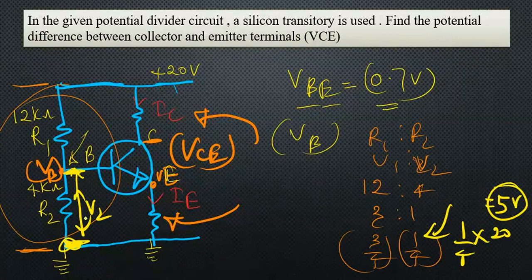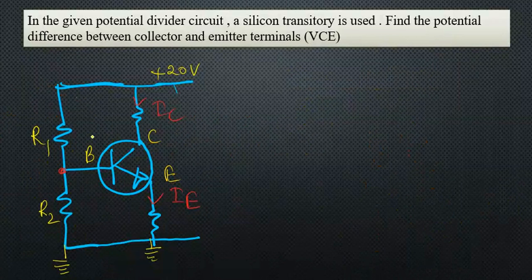That means the potential difference between this point and this point is 5 volts. The potential at B has to be 5, because the potential here is 0, then the difference is 5. So VB is 5 volts. We have 5 volts here.